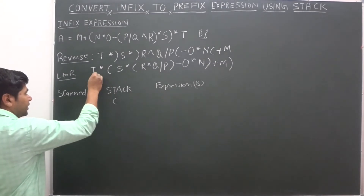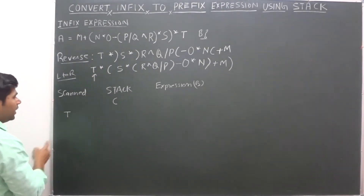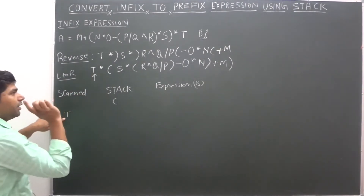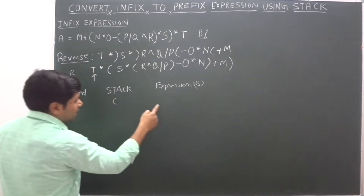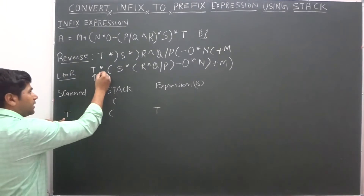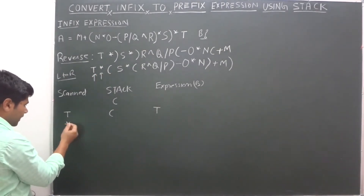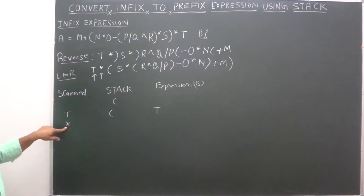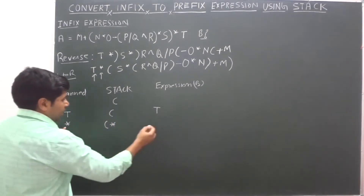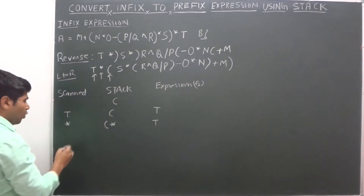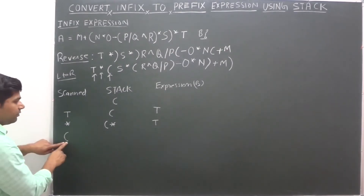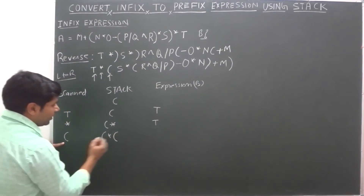First element is T. T is an operand. If an operand is encountered, we add it directly to the expression. So T goes into the expression. Next is star. Star is an operator. If an operator is encountered, we push it onto the stack. Next is an open parenthesis or left parenthesis — in that case, we push it onto the stack as well.